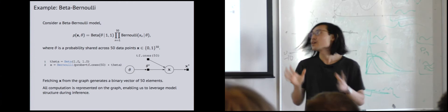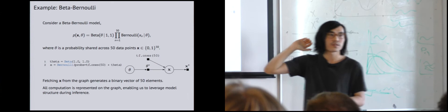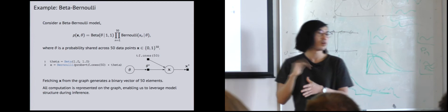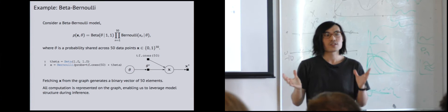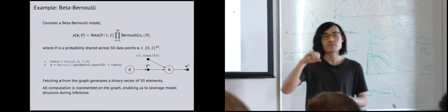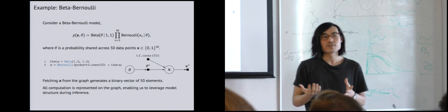If you imagine this as the computational graph shown on the right, it's basically that process. If you actually wanted to sample from this computational graph — which is all symbolic at the moment — fetching x from the graph would draw a value from theta, where theta-star represents the sample from theta and x-star represents the sample from x. Importantly, all computation is represented on this computational graph, so if you wanted to do symbolic algebra, reduce computation for numerical stability, do conjugacy, or various forms of exact inference, all those things are possible precisely because you've represented all computation on the graph.